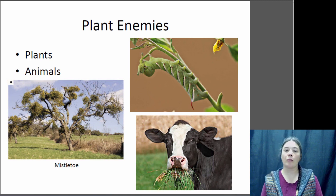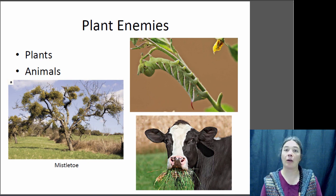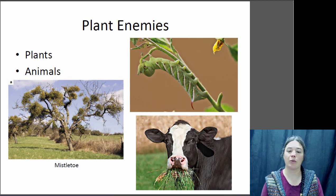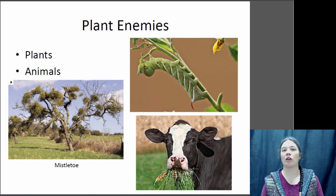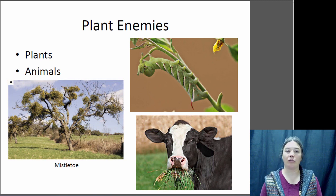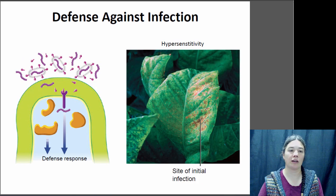Of course, there are a lot of animals that would like to eat plants. Some only eat parts of the plant — like a caterpillar that doesn't eat the whole plant — but then you have grazing animals like cows that are going to eat pretty much the whole plant. All of these things are hazards that plants need to defend themselves from, so let's take a look at some of the ways plants can defend themselves.